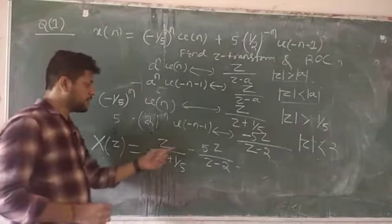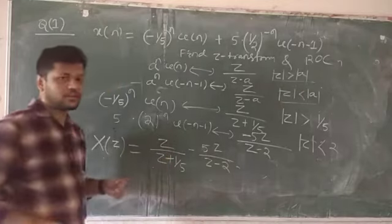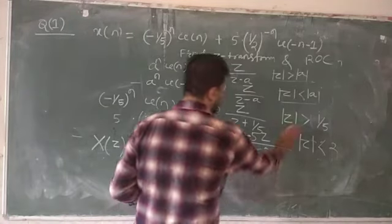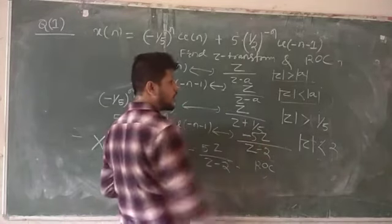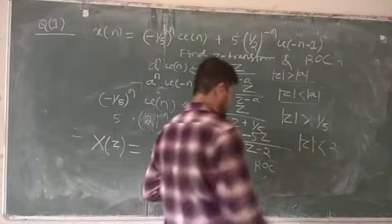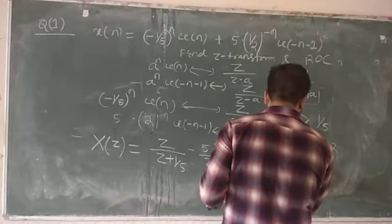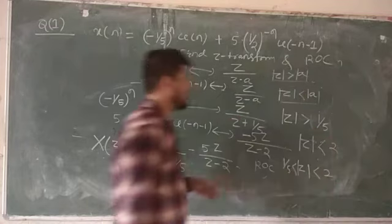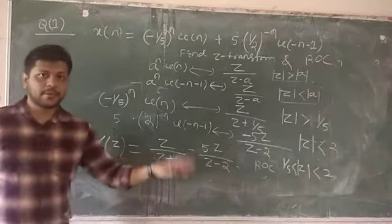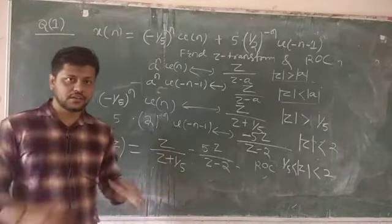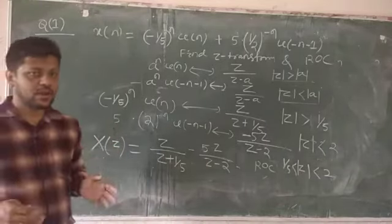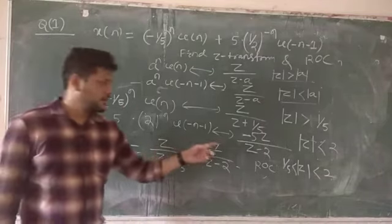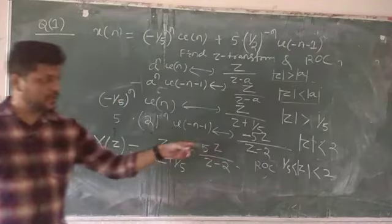The combined ROC: one condition says |z| > 1/2 and the other says |z| < 2, so z lies between 1/2 and 2: that is 1/2 < |z| < 2. This represents a ring — as expected for a two-sided sequence. This is a very important question frequently asked in competitive exams like ISRO and DRDO.